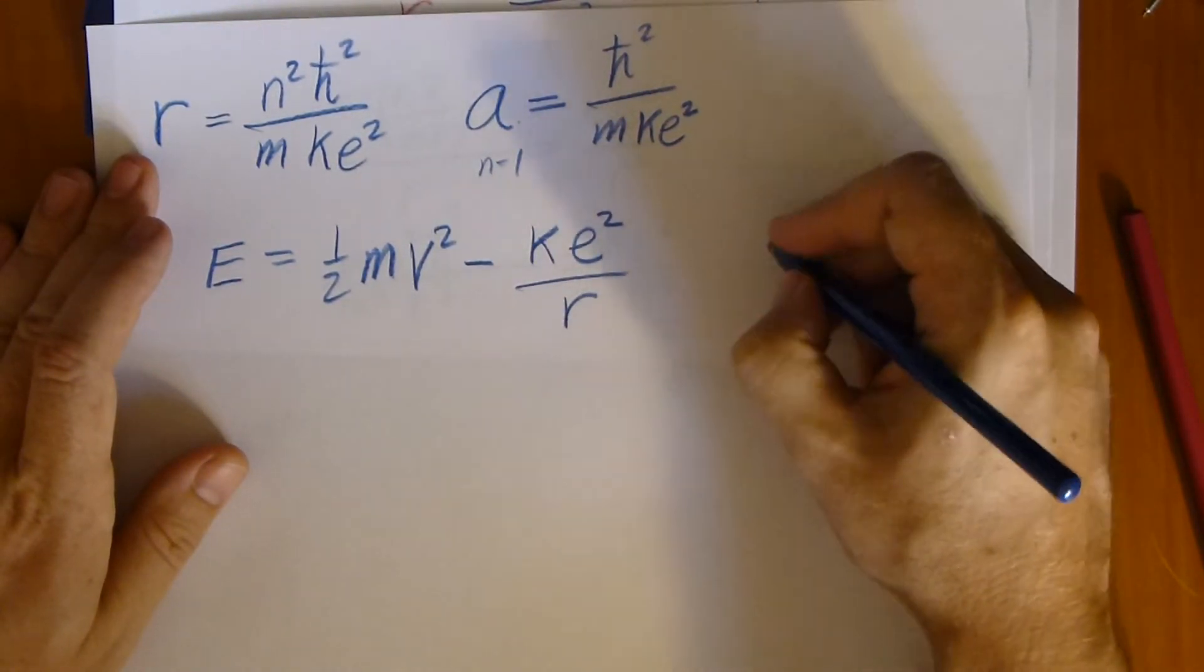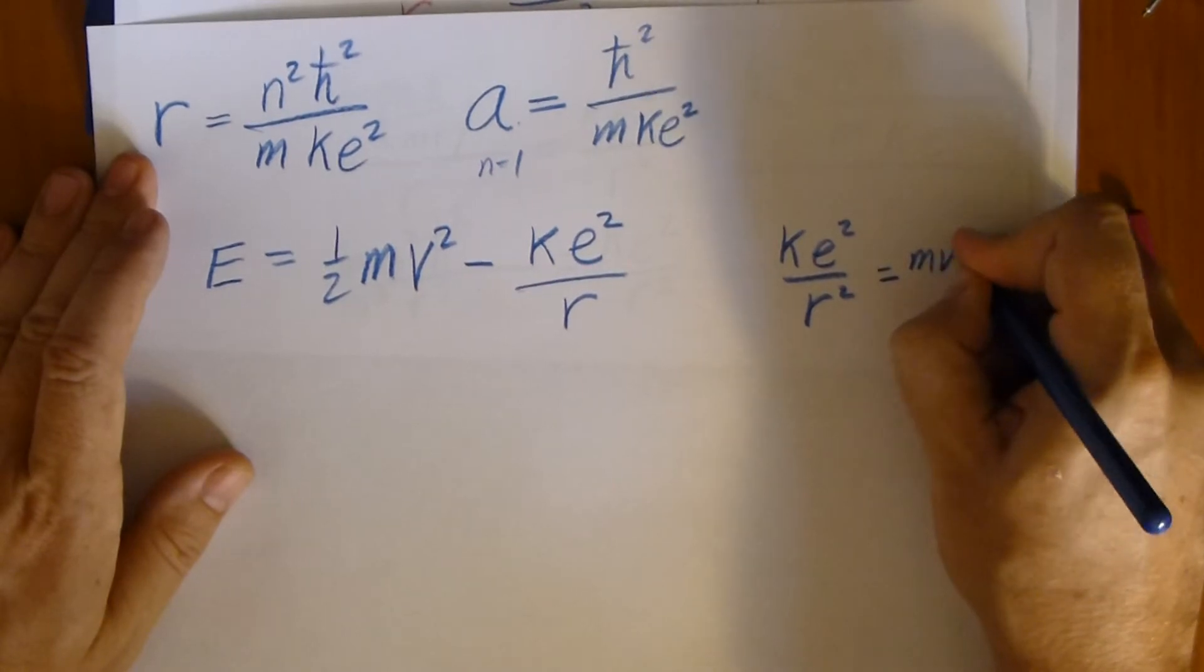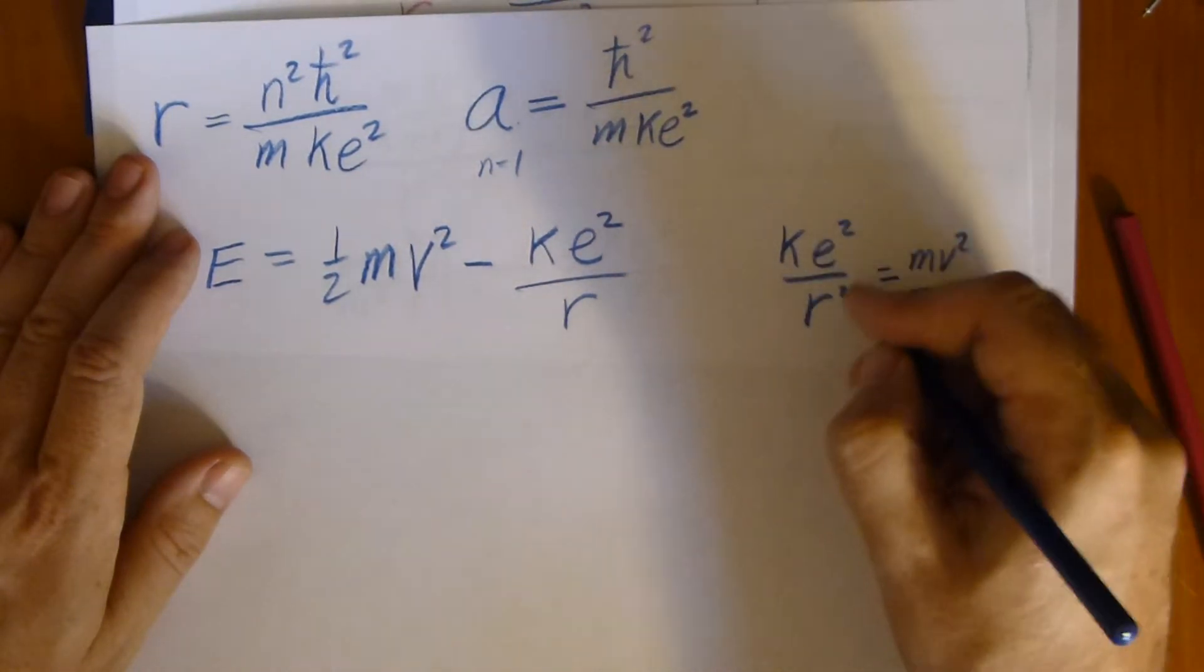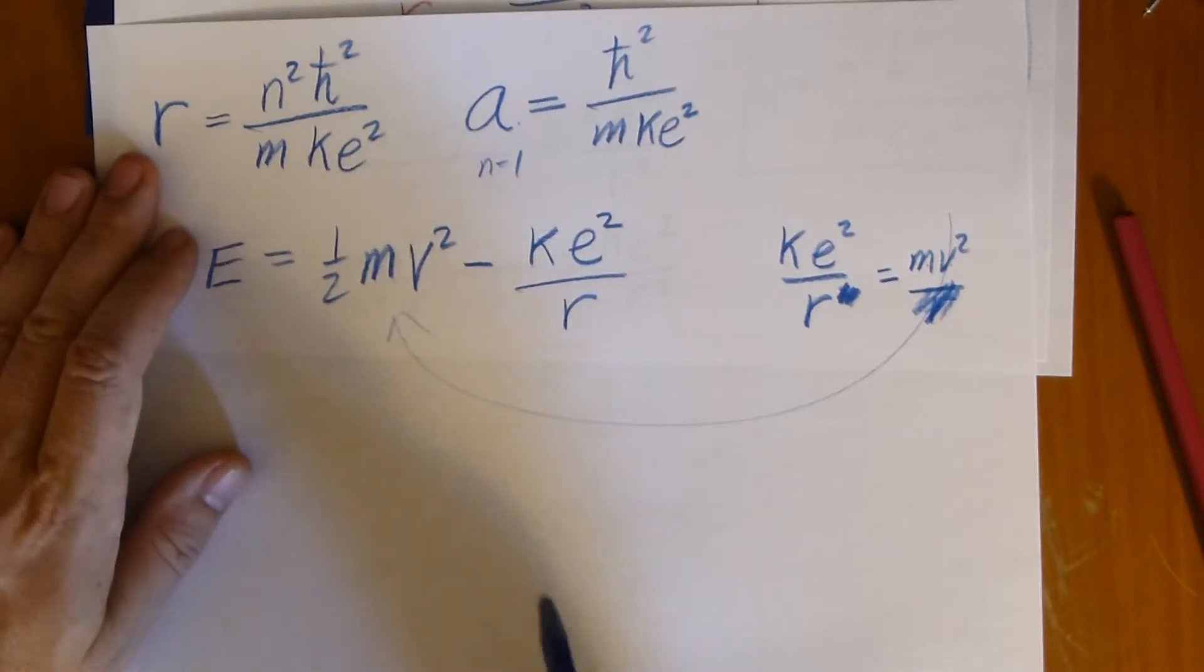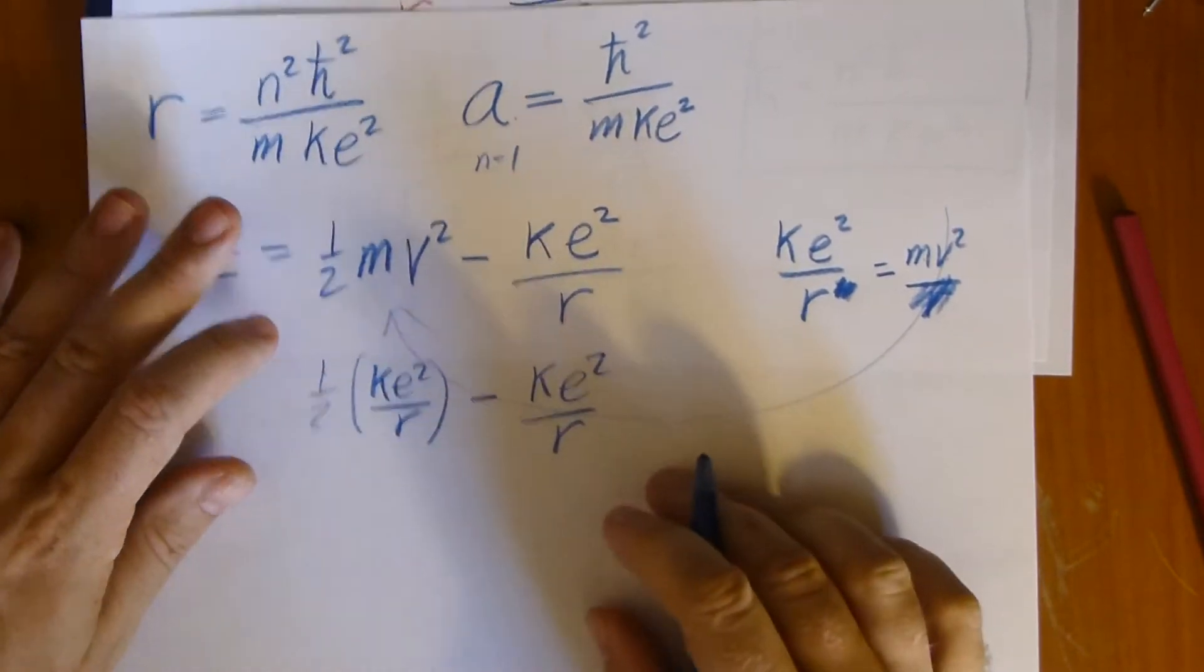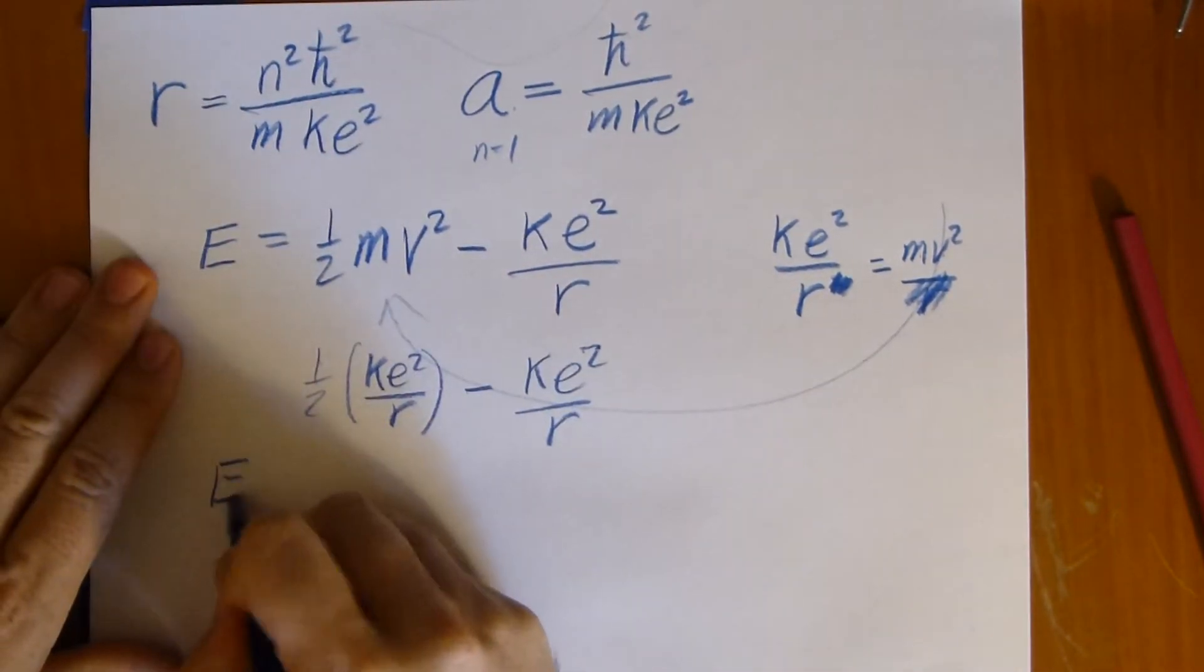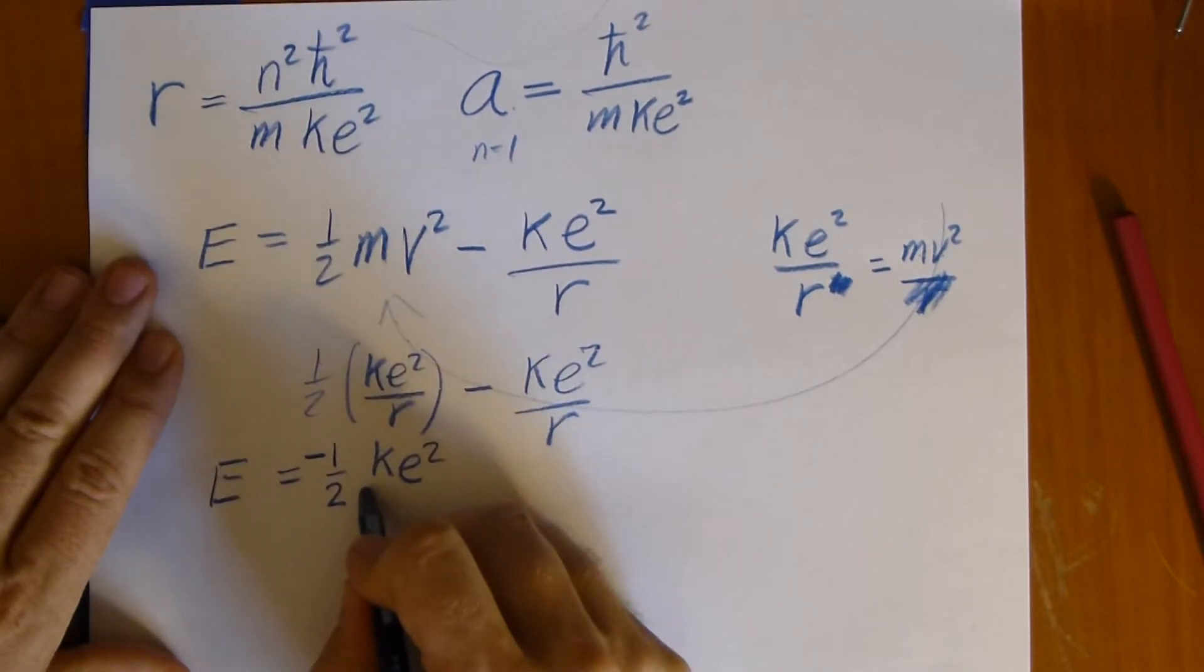The fastest way to do this is to take the force equation actually. Remember, we had K E squared over R squared equals M V squared over R. Let's multiply both of those times R. We get, plug that in over here, we get one half K E squared over R minus K E squared over R, and we get energy as being one half minus, so minus K E squared over R.